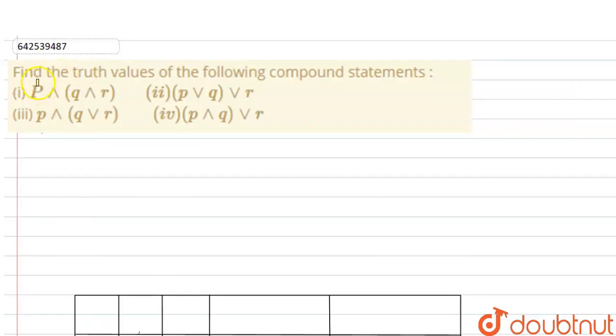The question is: find the truth values of the following compound statements. We are given four compound statements and we have to make the truth table and find the truth values.